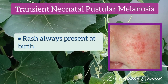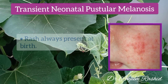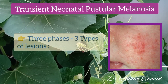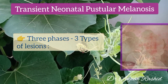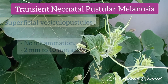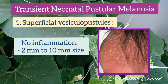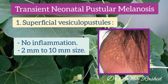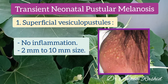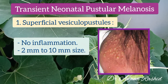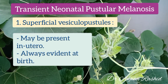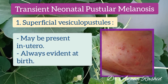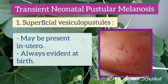They are always evident at birth. Now there are three phases, so three types of lesions can be seen. First is the superficial vesiculopustules without any inflammation. These range in size from 2 to 10 mm and they may be present in utero but they are always evident at birth.